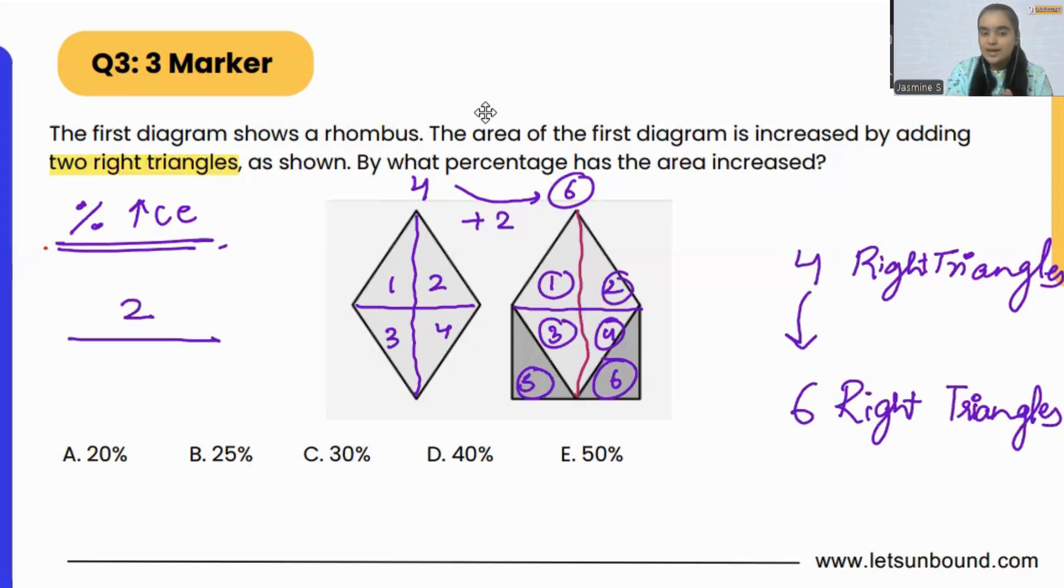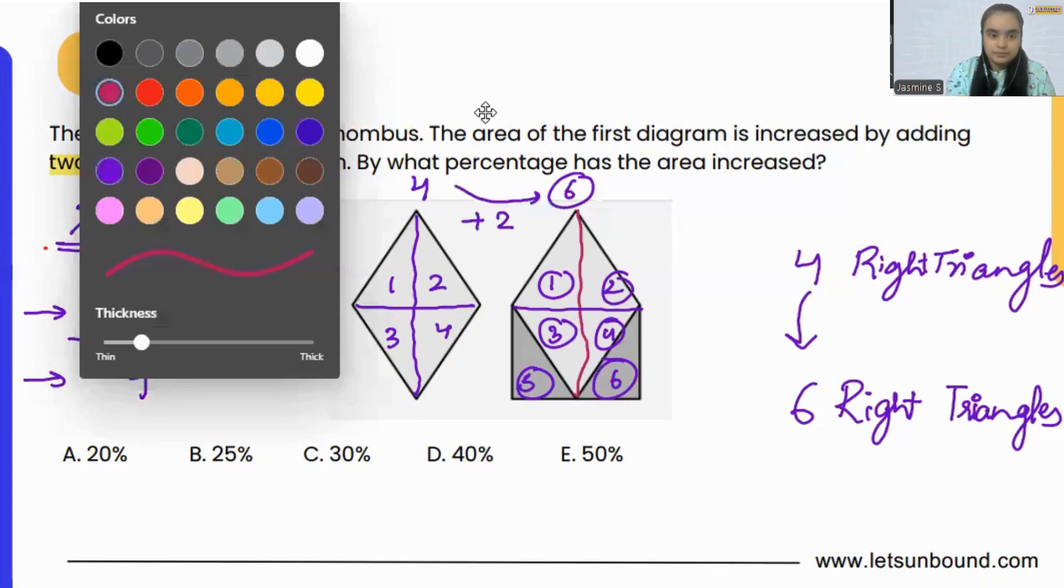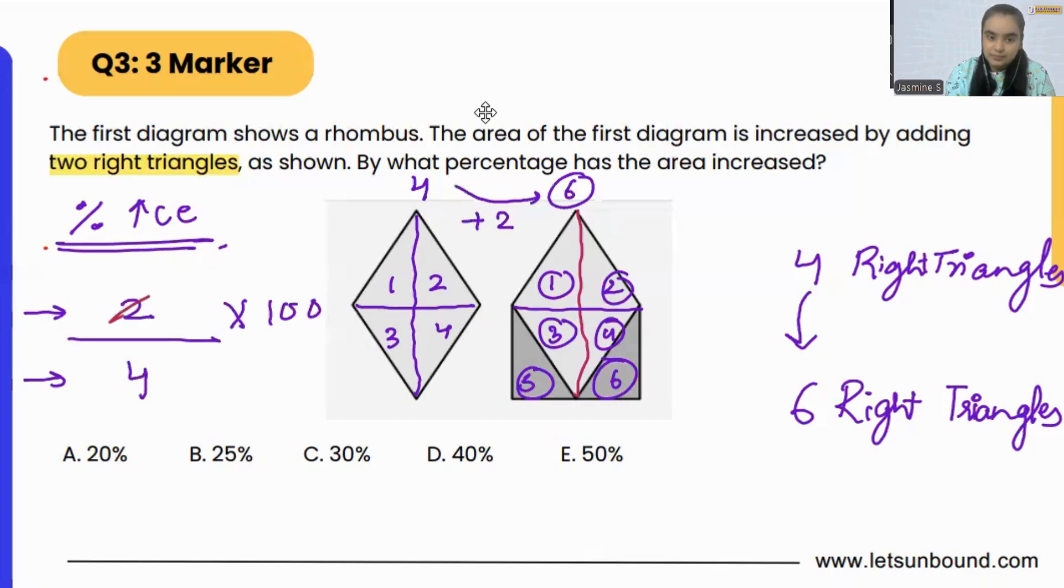So two triangles have been added and initially there were four, times 100 because we are finding percentage. And that's how we find out percent increase: change in something divided by the initial amount times 100. Now if you solve it, two-fourths is actually one-half, and a half times 100 is basically 100 over 2, or we can say 50.